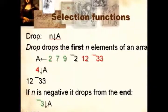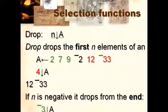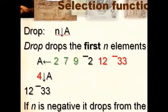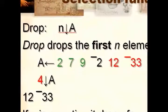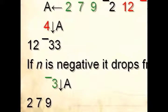Drop is similar. Drop uses the down arrow, which is the Ctrl+U key on your keyboard, and will drop the first n elements of an array. Likewise, if n is negative, it will drop from the end.